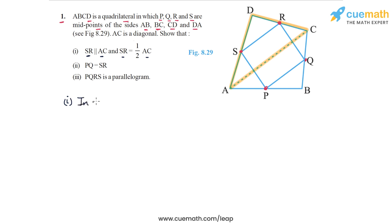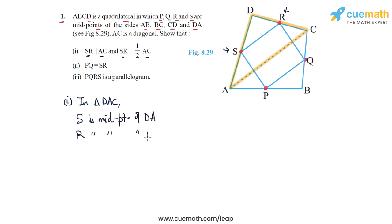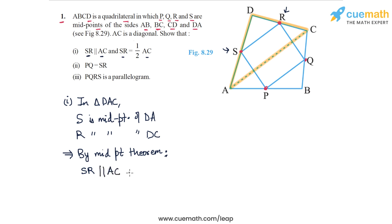In triangle DAC, the two midpoints we have are point S, which is the midpoint of DA, and point R, which is the midpoint of DC. So S is the midpoint of DA and R is the midpoint of DC. By the midpoint theorem — the segment joining the midpoints of two sides of a triangle is parallel to the third side and equal to half of it — SR must be parallel to AC and equal to half of AC. So part one is directly proven using the midpoint theorem.